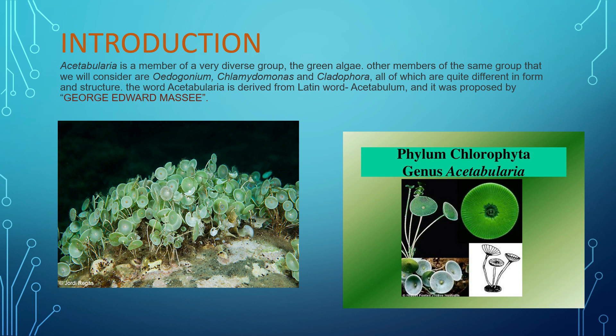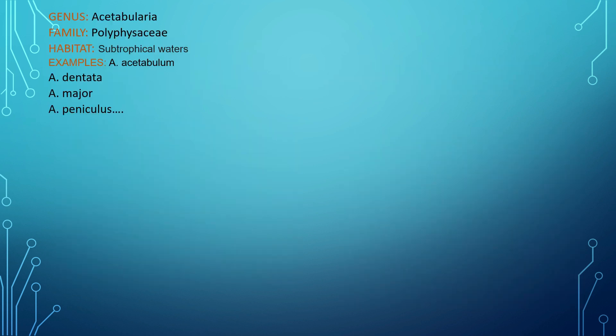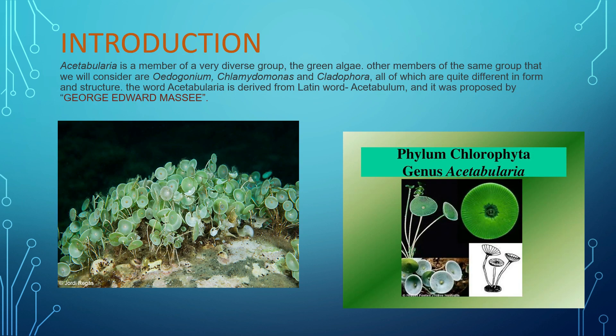Oedogonium, Chlamydomonas, and Cladophora also belong to the group green algae, but they differ in their unique structures. Similarly, Acetabularia is also one of the green algae that differs by its unique structure, which gives it a plant-like appearance. The word 'Acetabularia' is derived from the Latin word 'acetabulum'.